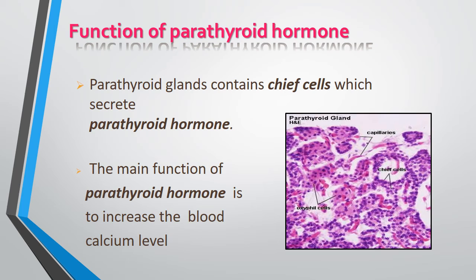Now, the function of the parathyroid hormone. The gland contains chief cells which secrete the parathyroid hormone, as seen in the figure. The main function of the parathyroid hormone is to increase the blood calcium level.